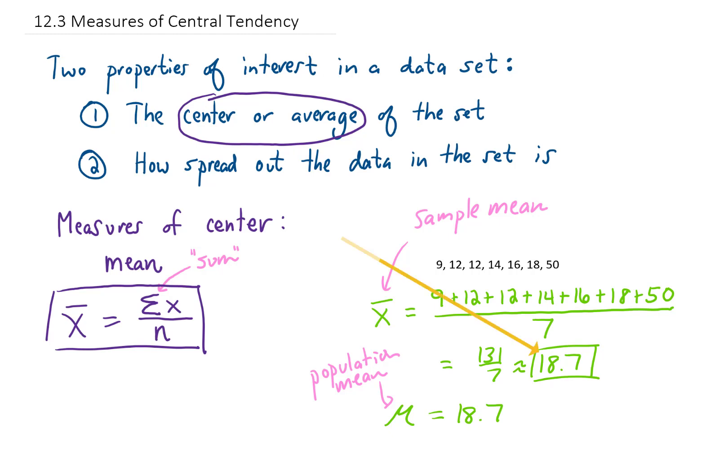Something you'll notice about this mean of 18.7 is that it's actually larger than every single data value in this set except for one. This last data value of 50 is really altering our mean value. So in some sense, this 18.7 doesn't really do a good job of representing the center value of this data.